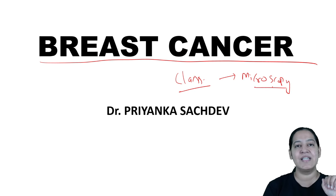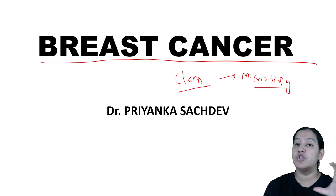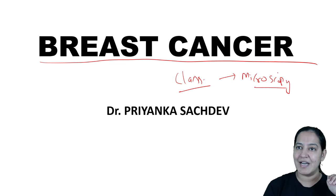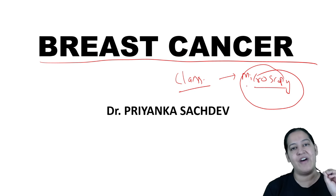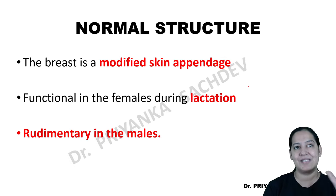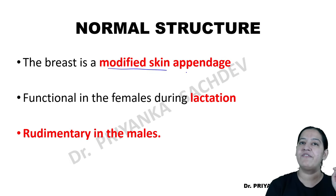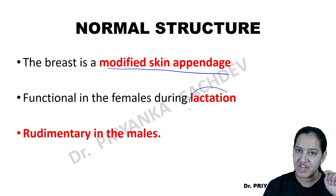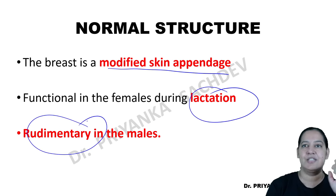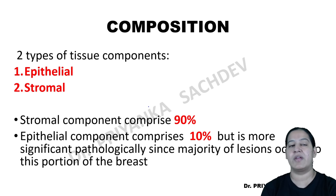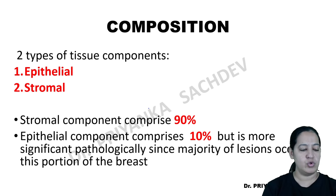Let me start without wasting time. Before coming to the classification and microscopy, you should understand the normal structure of the breast. If you understand the normal breast structure, understanding microscopy is fun for you. We all know that breast is a modified skin appendage. It is functional in females during lactation but rudimentary in males always. It has two components.